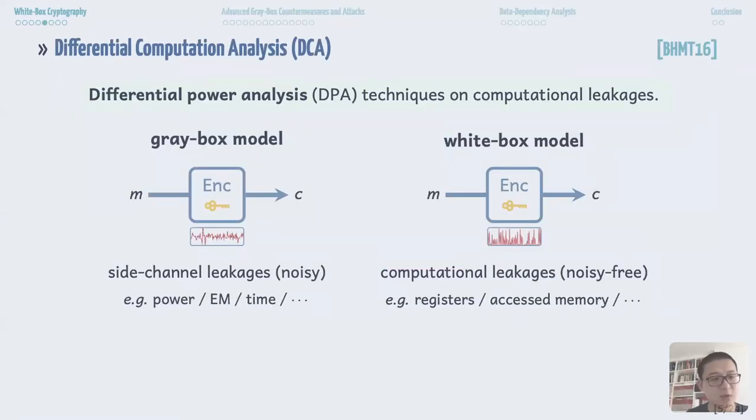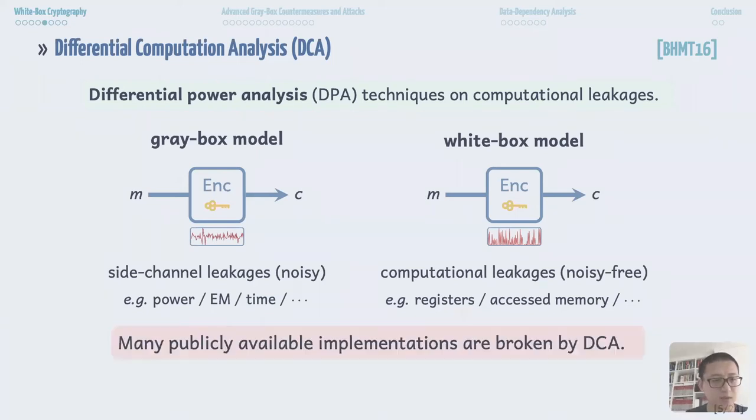At CHES 2016, Bos et al. suggested to apply differential power analysis techniques to break white box implementations. Classical DPA in gray box model works with noisy side channel leakage such as power consumption, electromagnetic radiation, and execution time. In white box model, the attack is called differential computation analysis since the attack works with the noise-free computational leakage which could be any collected running information such as values in the register and memory. DCA is a generic attack because it doesn't need to know any implementation detail. Surprisingly, DCA has shown that it is able to break any publicly available white box implementation. DCA has become a main threat of the security paradigm since then.